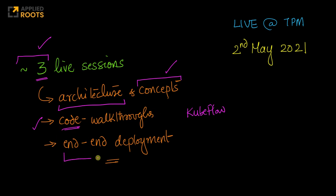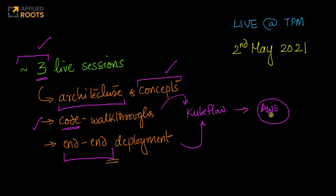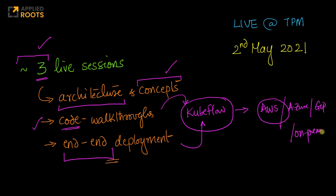Along with code walkthroughs, we'll also show you end-to-end deployment of machine learning systems using Kubeflow. If time permits, we'll also cover how to deploy a Kubeflow system on various compute platforms or cloud-based platforms like AWS. We will try to cover the concepts independent of the cloud platform, because you can take a Kubeflow system and deploy it on any cloud-based system — whether it's AWS, Azure, GCP, or your own on-premise servers. We'll show you some cases on how to deploy it on a cloud-based system like AWS in future live sessions.